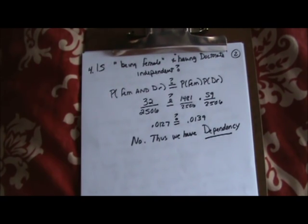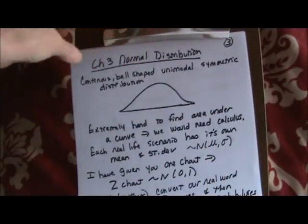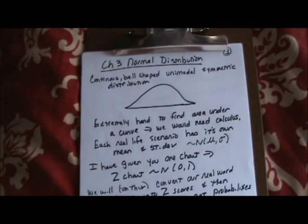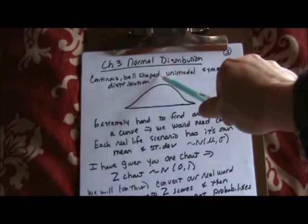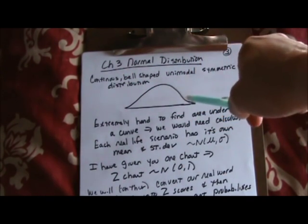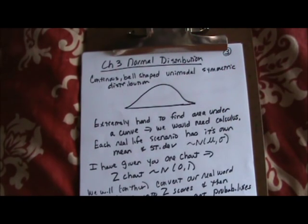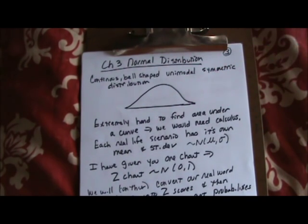We're going to switch gears now. That ended the probability topic. Now we're starting into a very special distribution called the normal distribution. This is supposed to be perfectly unimodal and symmetric — sometimes called bell-shaped, sometimes called the normal curve. It is a continuous distribution, meaning we can have every possible decimal. There are a lot of distributions that look like this, but the very special one is called the normal distribution.